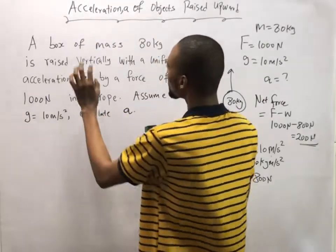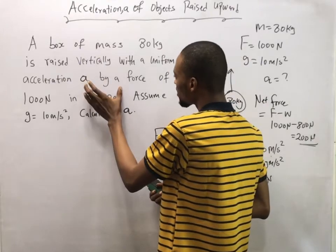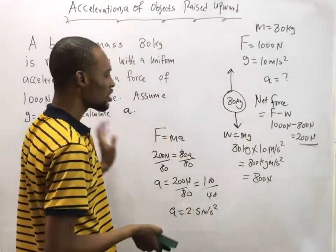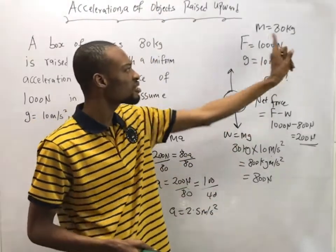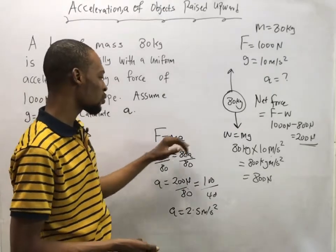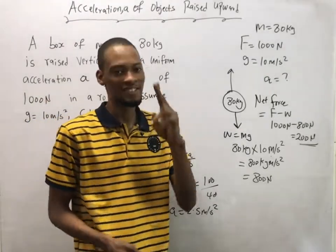So next time if you are given this type of question, a box or anything of mass is raised vertically upward with uniform acceleration by a force and gravity is acting on it, simply look for the weight, subtract the weight from the given force, and apply this formula: force equals ma. That's how to do that. Hope you love this.